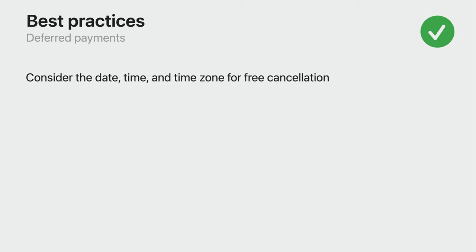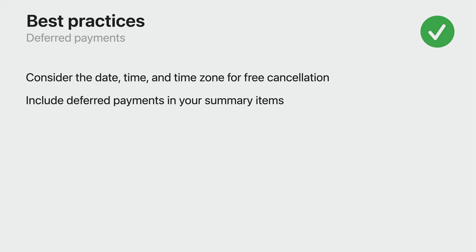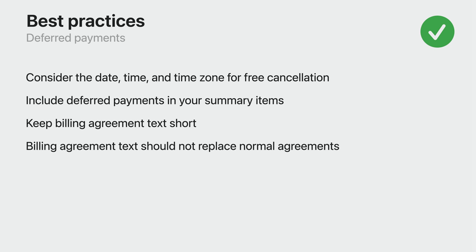When working with deferred payments, here are some best practices to follow. If you need to describe a free cancellation policy, carefully consider the date, time, and timezone provided to the deferred payment request. Remember to include the deferred payment within your summary items and ensure you set the appropriate merchant name — this is not done for you automatically. When providing a billing agreement, remember to keep it short; it should only act as a summary of key facts and should not replace any normal billing or legal agreements in place. Lastly, specify a token notification URL so you can be kept up to date with lifecycle events of the Apple Pay merchant token if one has been issued.